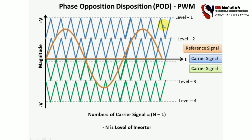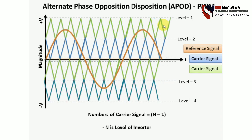Next is the alternate phase opposition disposition (APOD) technique. Four different carrier signal layers are used. The first level has zero-degree phase shifting, the second level has 180-degree phase shifting, and the next level is again 180-degree shifted. This alternating pattern of carrier signals is what defines the APOD technique.